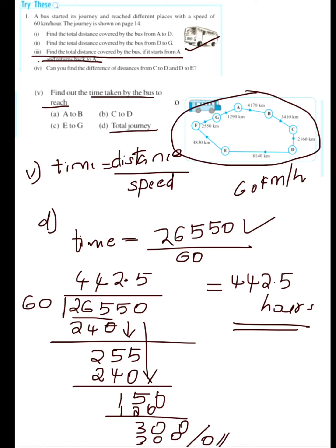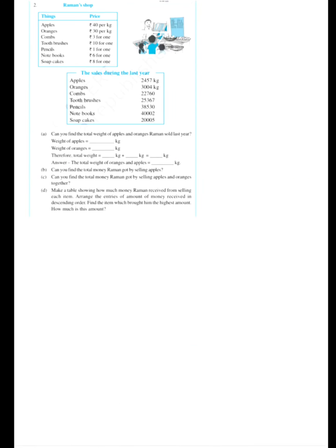Now let's see the second main question. A list of things with their prices and last year's sales are given. The first sub-question, part A: can you find the total weight of apples and oranges that Ramen sold last year? From the figure, the weight of apples is 2457 kg.